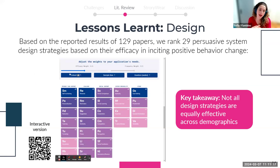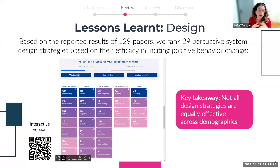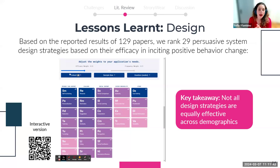Part of our research question was to uncover factors that positively affect behavior change. We recognized the need for systematization, and based on the results of the 129 included papers, we ranked 29 design strategies for persuasive system design according to their effectiveness in promoting physical activity. Interestingly, not all design strategies are equally effective across demographics — I invite you to explore the online tool through the QR code we built specifically for this purpose.